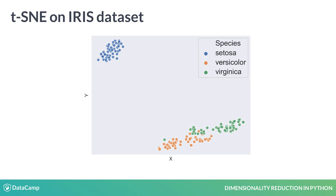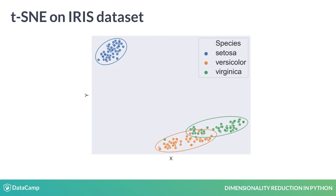TSNE will maximize the distance in two-dimensional space between observations that are most different in a high-dimensional space. Because of this, observations that are similar will be close to one another and may become clustered. This is what happens when we apply TSNE to the IRIS dataset. We can see how the Setosa species forms a separate cluster, while the other two are closer together and therefore more similar.